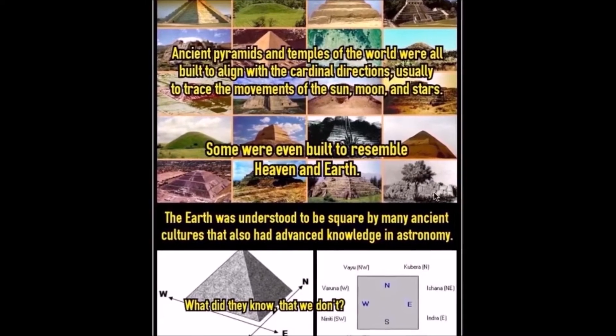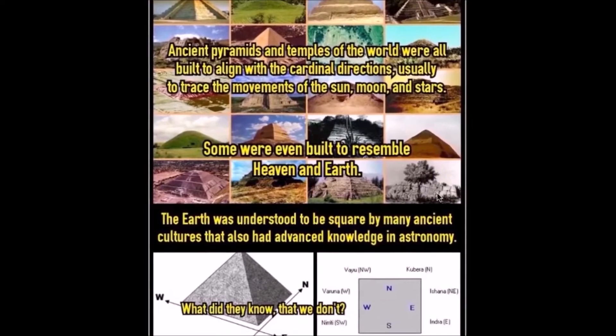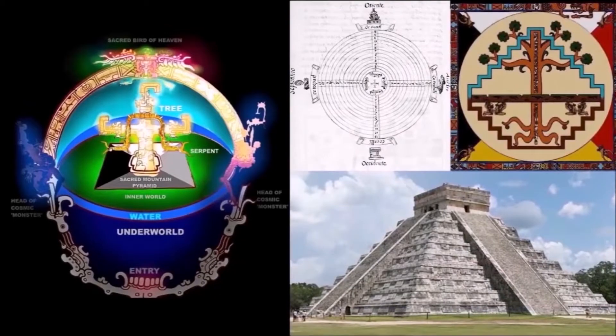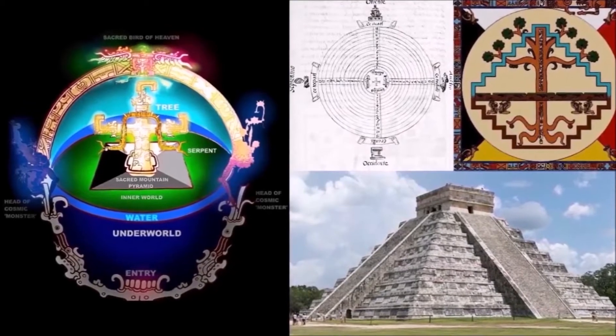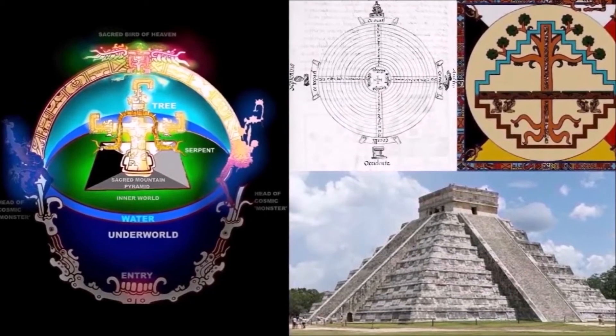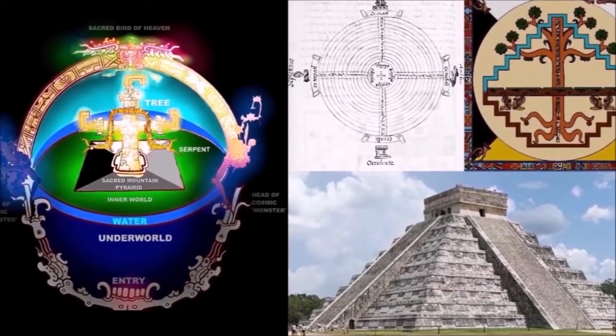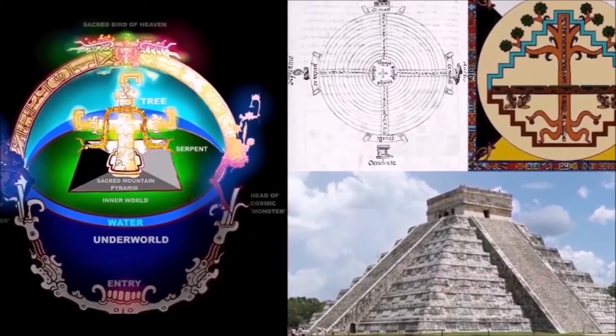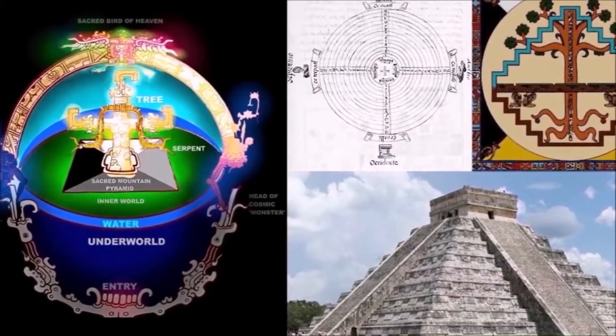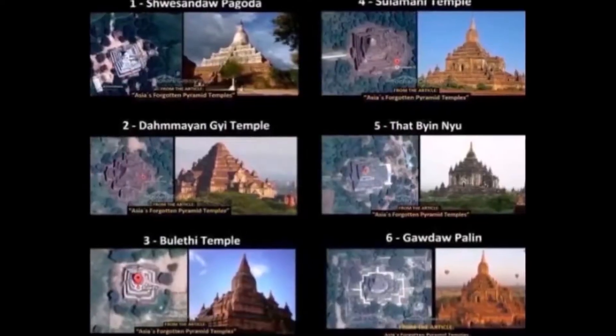Many ancient cultures had advanced knowledge in astronomy and showed the flat Earth with four corners. All these ancient cosmologies have a pyramid in the center with a square base.